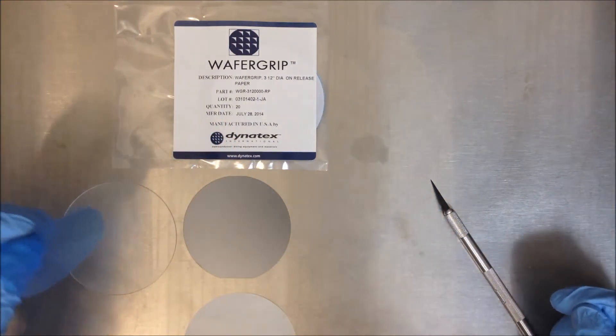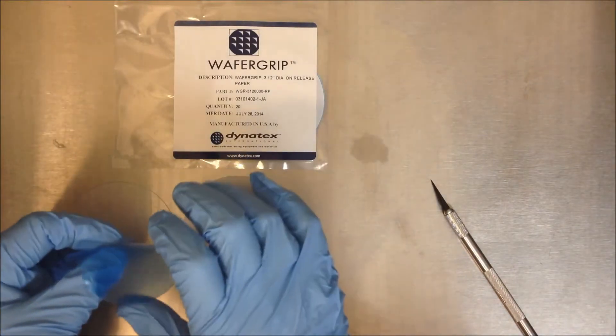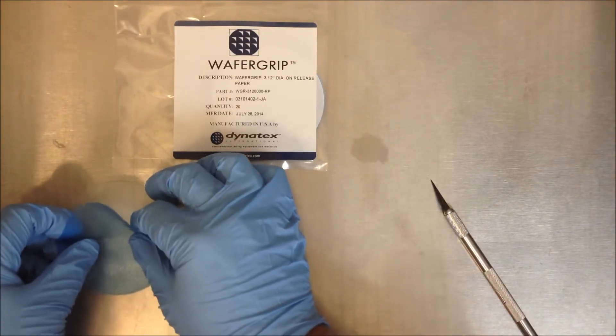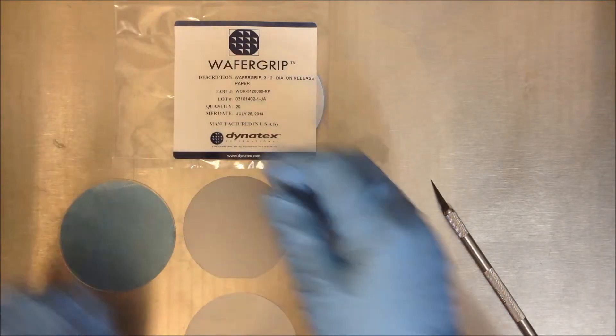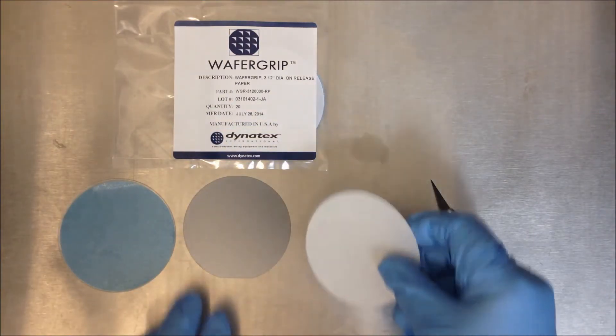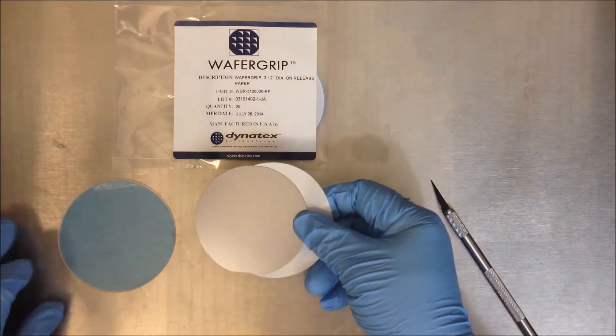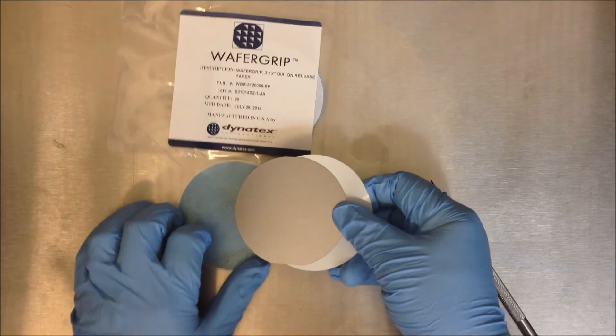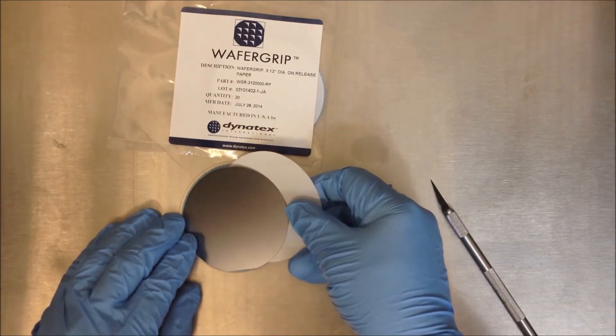Now to make the stack, apply the wafer grip smooth side onto the carrier or substrate and center it. Then take the wafer cradle, ease the wafer and place it centered onto the wafer grip.